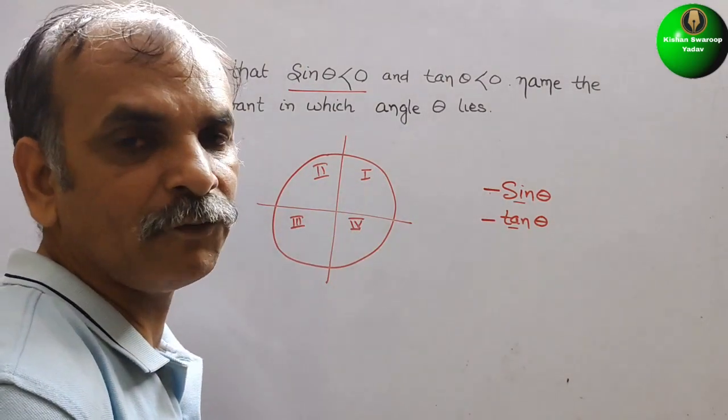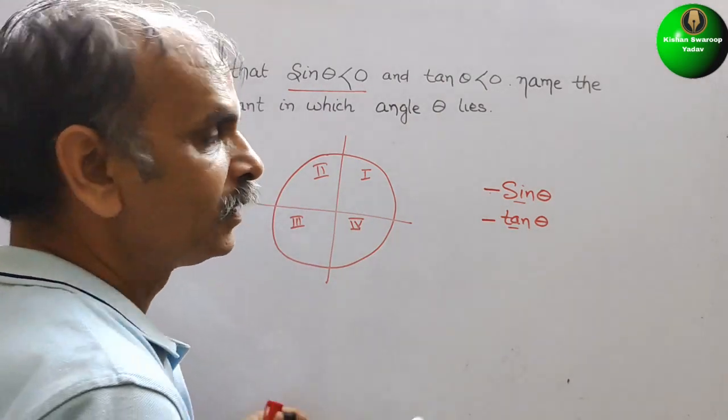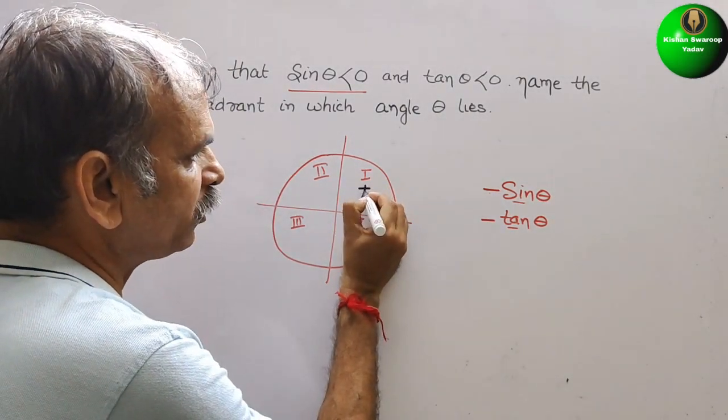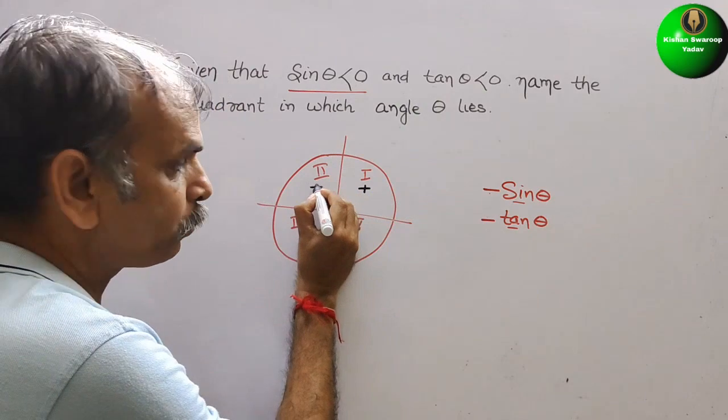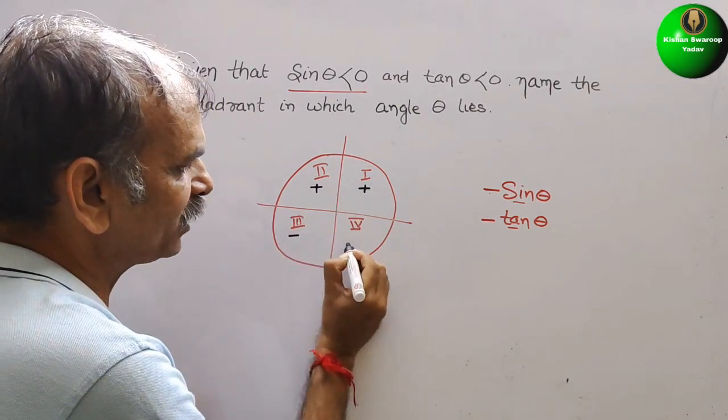For sin theta, we know that first quadrant is positive. This is also positive. This is negative. This is negative.